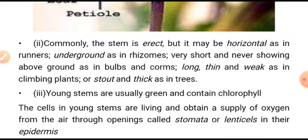Younger stems are usually green and contain chlorophyll. The cells in younger stems are living and obtain a supply of oxygen from the air through openings called stomata or lenticels in their epidermis. We have to note that in some younger stems they have green pigment called chlorophyll, and the cells in younger stems are living and obtain a supply of oxygen.